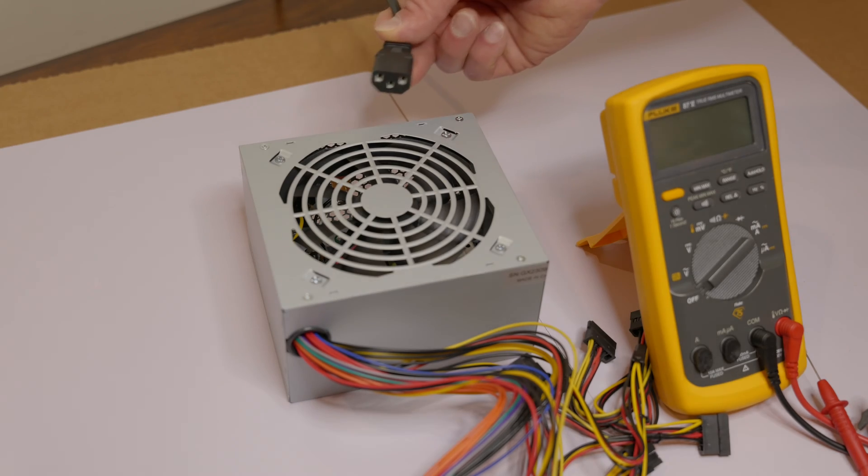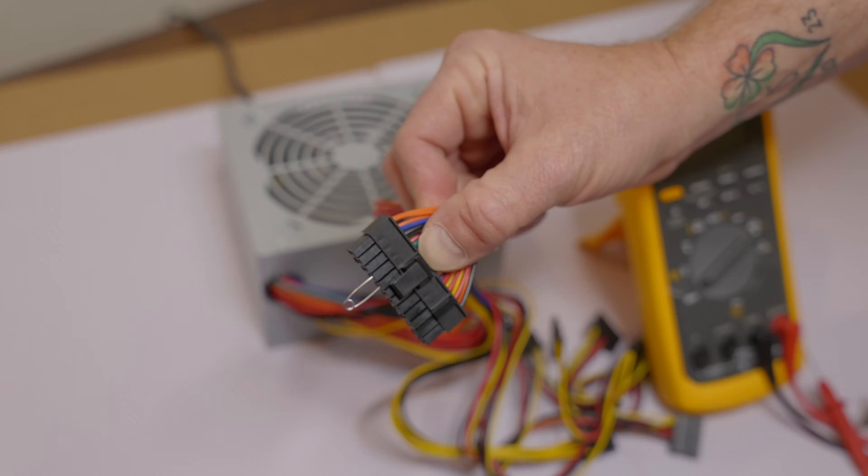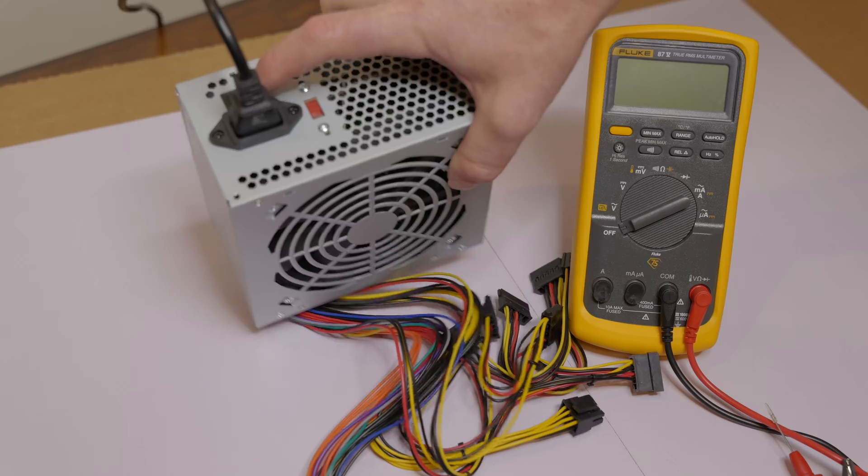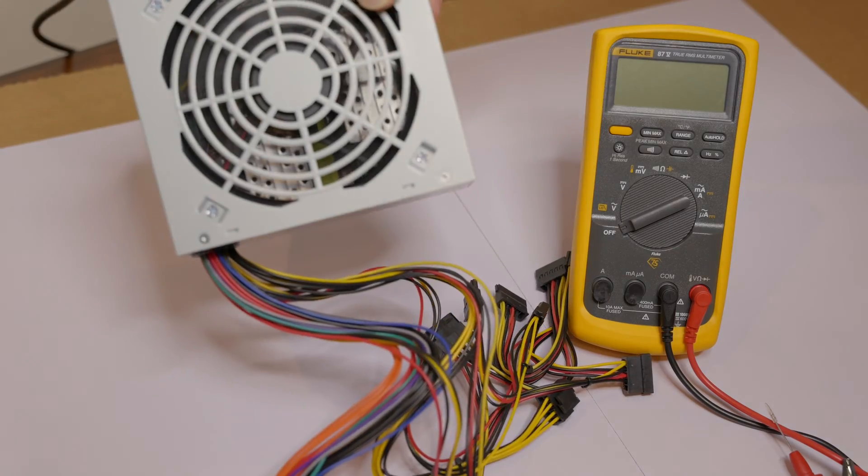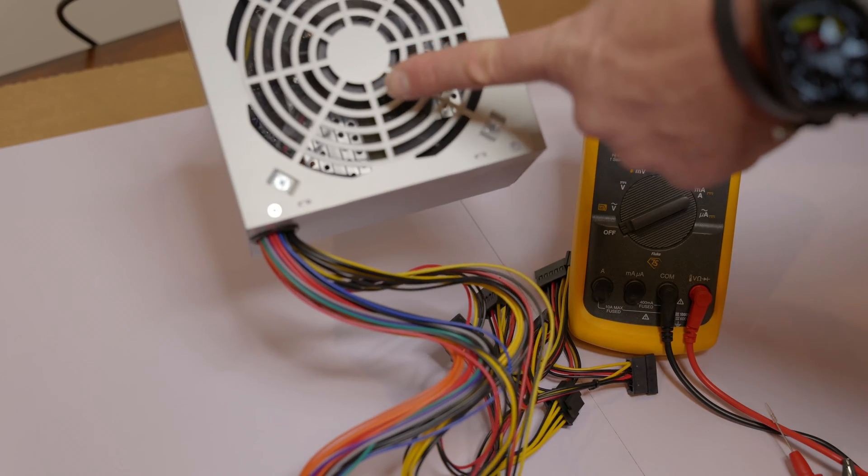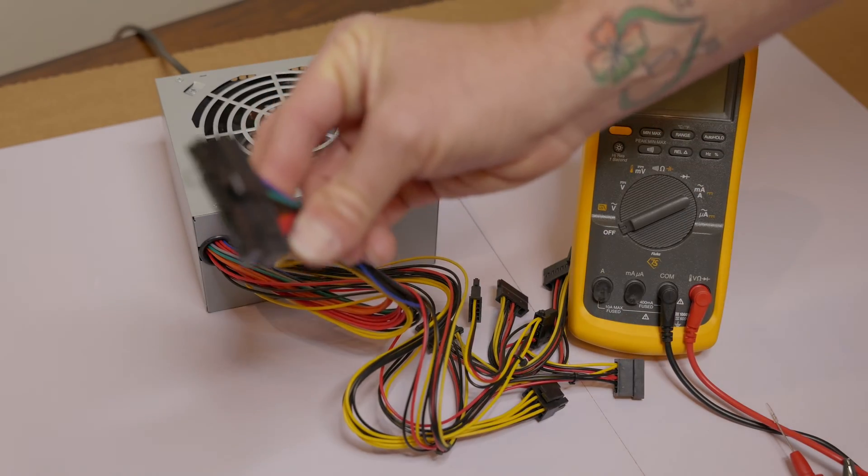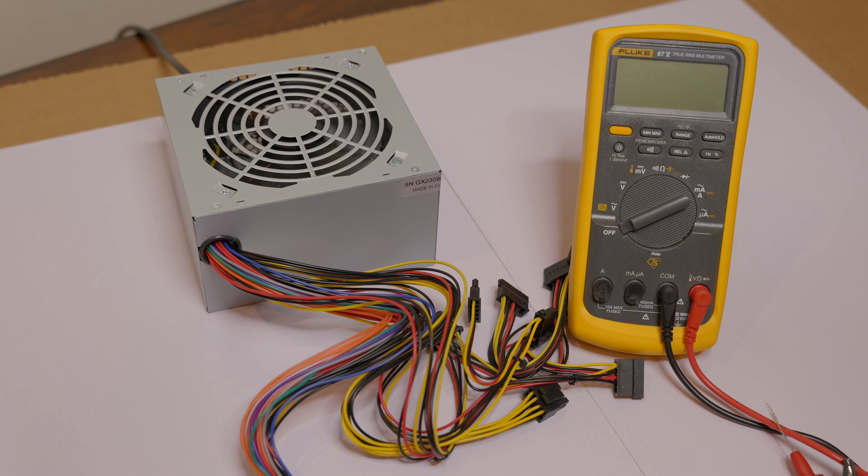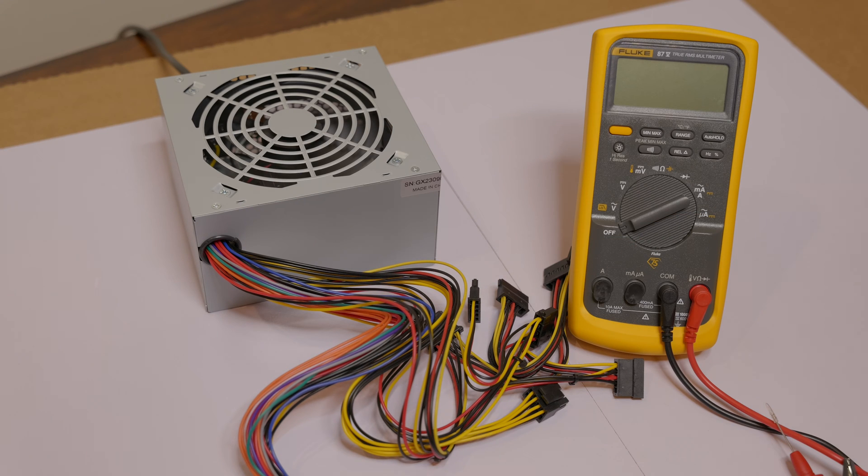Next, plug your power supply back in with your jumper still installed. Next, power on your power supply. You should see your fan come on. If your fan doesn't come on with your jumper installed, then right off the bat you know you have a problem and it's probably bad, but you can proceed on and check for voltage anyway.